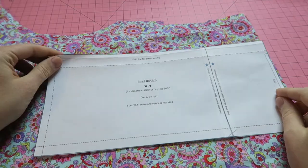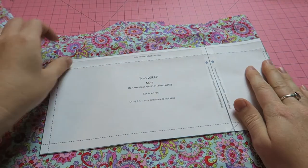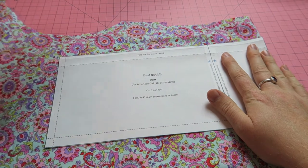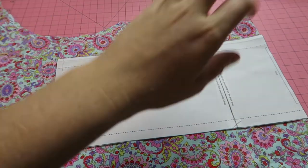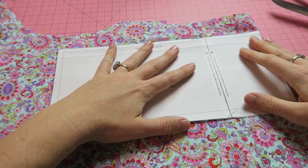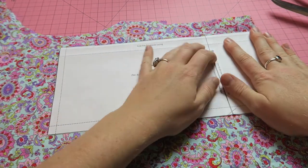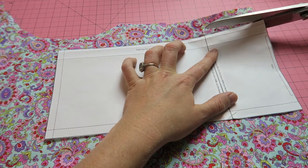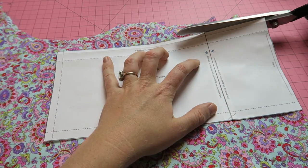Und wenn man dann das Schnittmuster hat und das Schnittteil, dann legt man es auf den Stoff und schneidet, wenn die Nahtzugabe denn schon enthalten ist, genau an der Kante entlang, um dann das Stoffstück genauso groß zu bekommen, wie man es braucht für das Projekt.